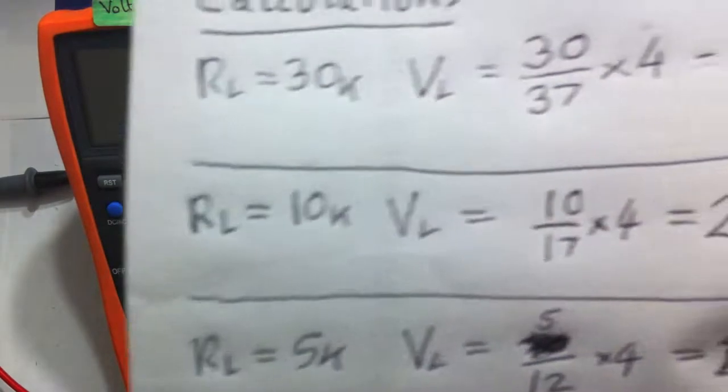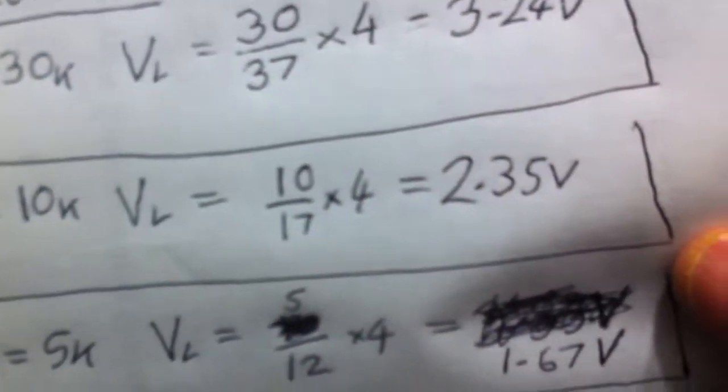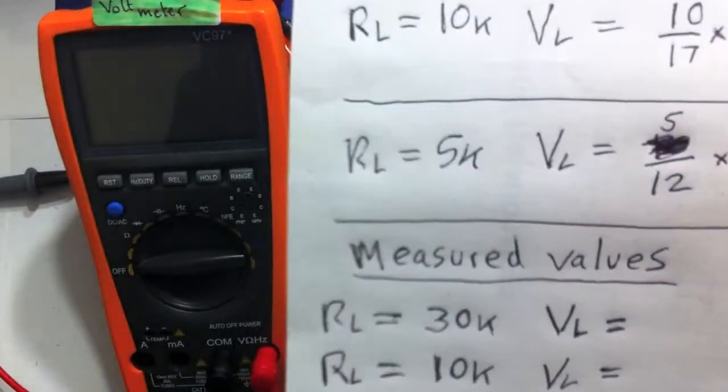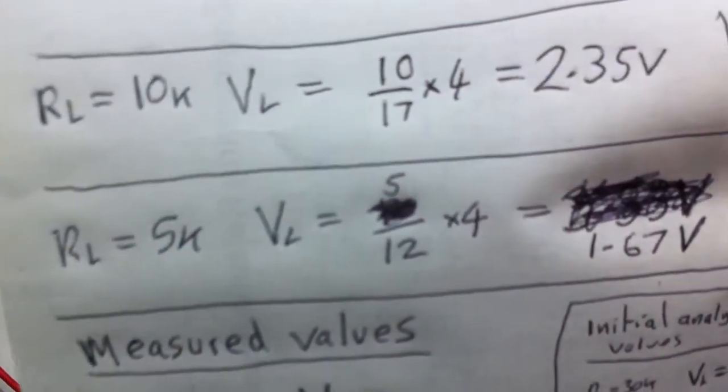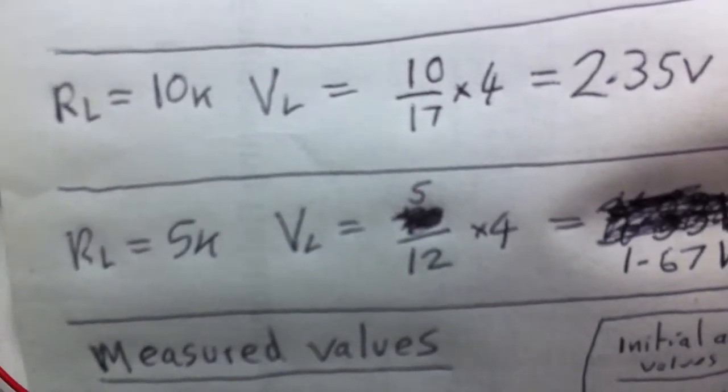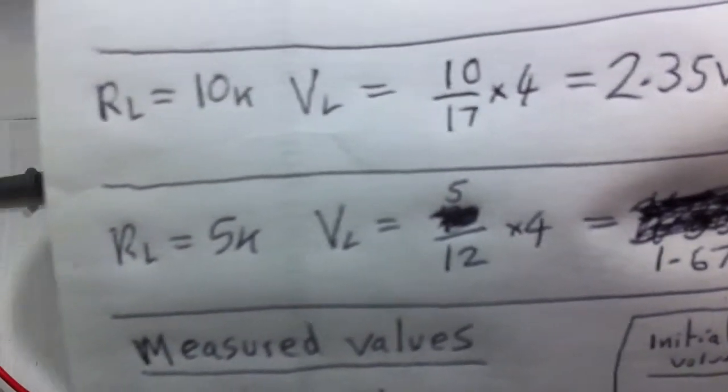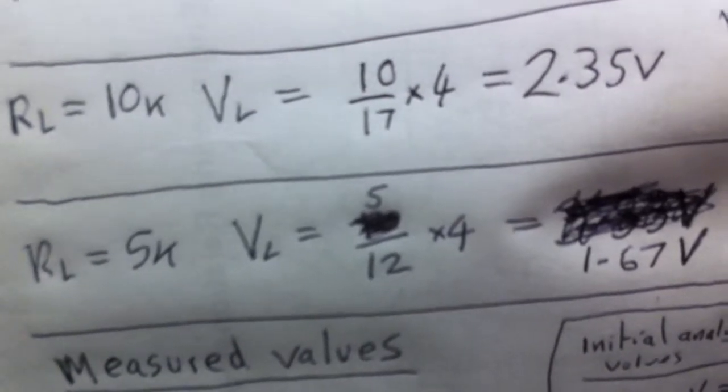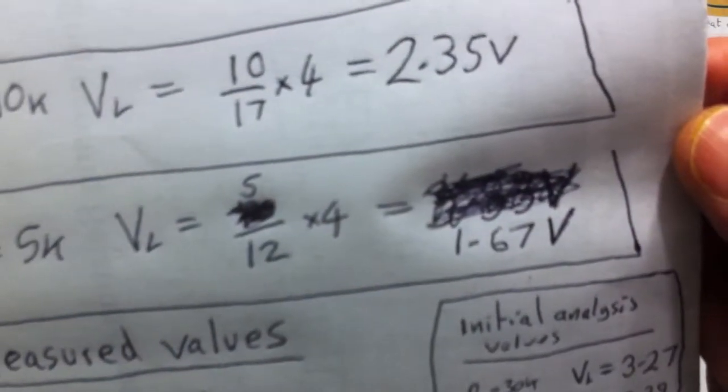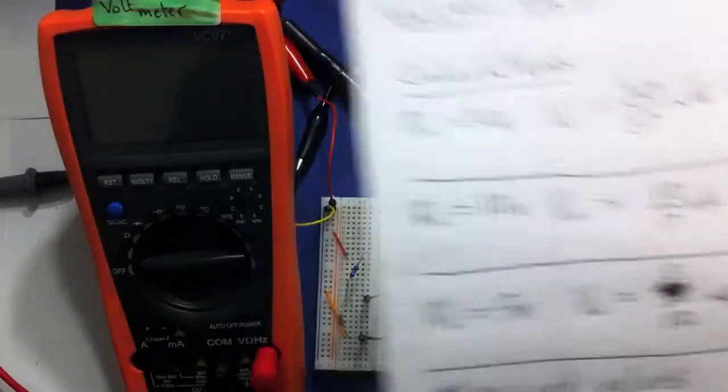Similarly for the 10k, exactly the same thing again, we end up with 2.35 volts. And finally for the 5k, I've made a mistake there. It's easy to make a mistake doing this. So there's 5 over 5 plus 7, which is 12, times 4. That gives you 1.67 volts.